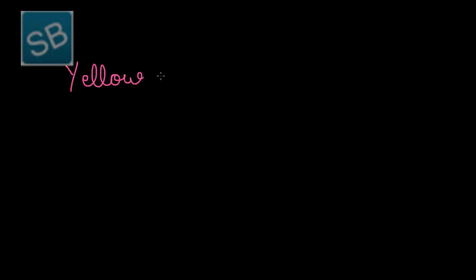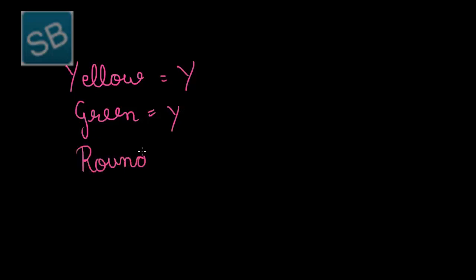To start the experiment, Mendel selected pure breeding yellow and round-shaped seed producing plants. The gene for yellow colour was represented by capital Y, and for green it was represented by small y. For the shape, the gene for round was capital R, and for wrinkled it was small r.